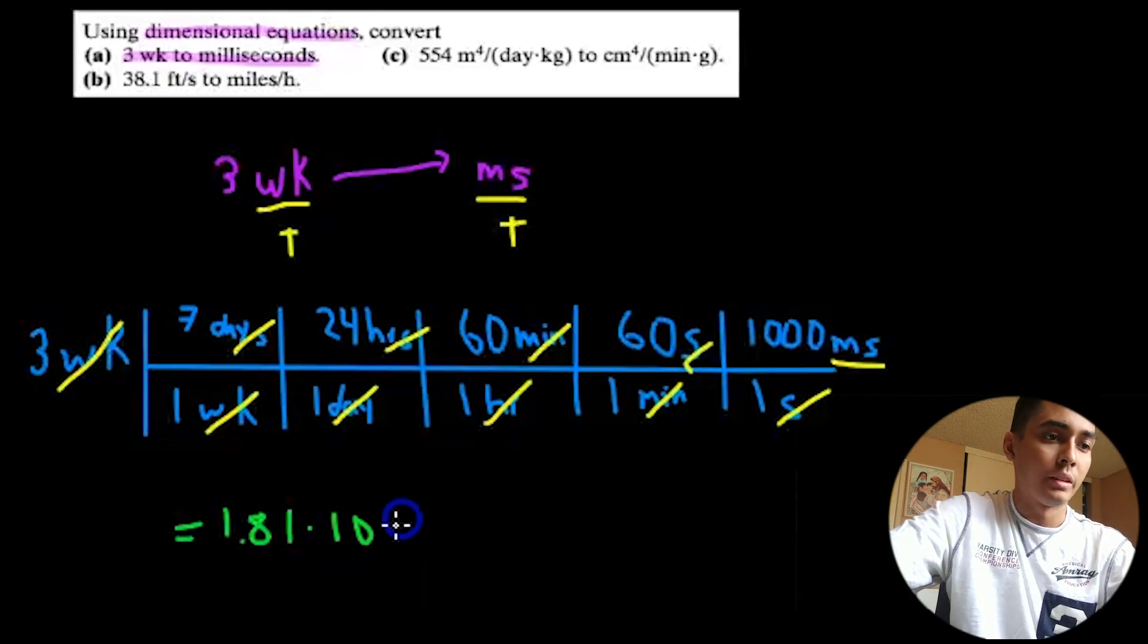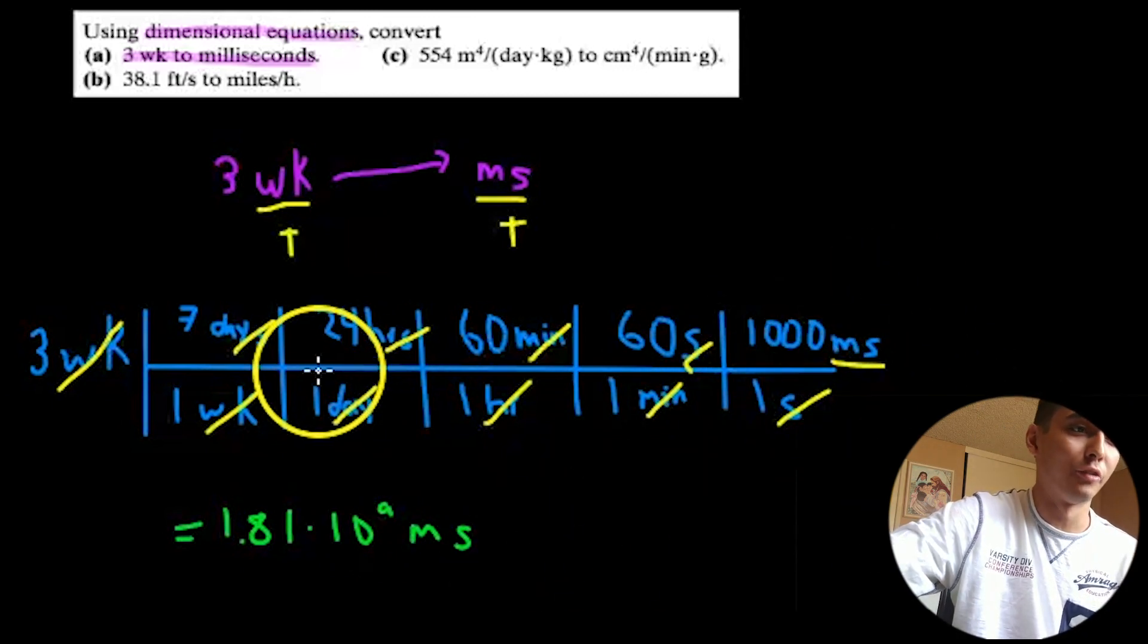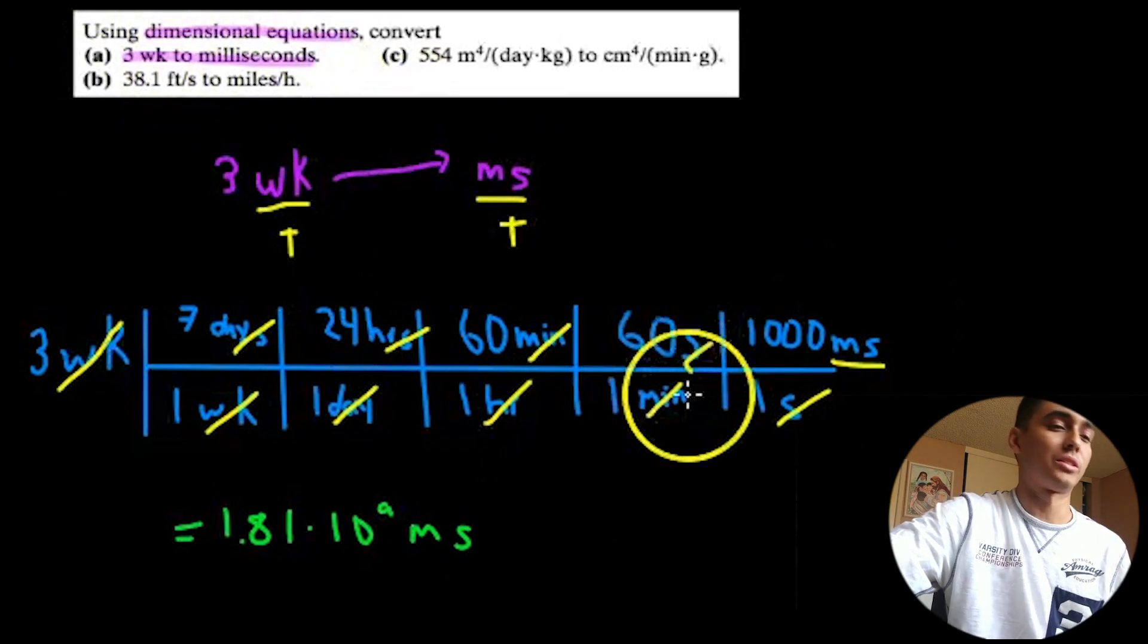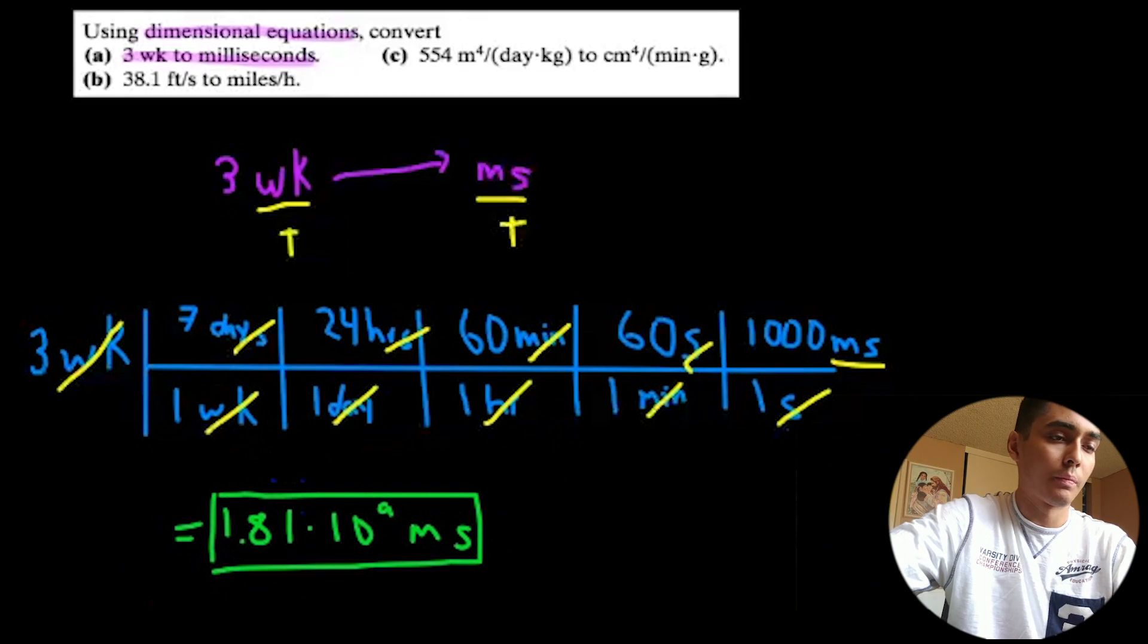So we can see that this number is 1.81 times 10 to the 9th, which is insanely large, which makes sense, right? Because there's a ton of milliseconds in three weeks. That makes sense to me. So I'm going to go ahead and box this in. So hopefully that makes sense. If it doesn't, feel free to ask me some questions.